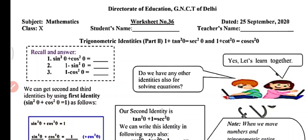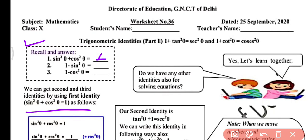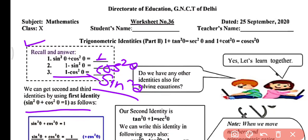We studied the first identity in the last video, that is worksheet number 35, where we studied sin² θ plus cos² θ equals 1. From that identity, 1 minus sin² θ equals cos² θ, and 1 minus cos² θ equals sin² θ — so three identities come from sin² θ plus cos² θ equals 1.